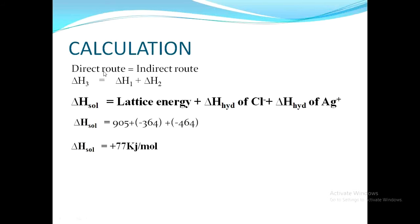In the calculation part, we know the direct route is equal to the indirect route. The direct route is represented by ΔH3, which is equivalent to ΔH1 plus ΔH2. ΔH3 is the enthalpy of solution of silver chloride, ΔH1 is the lattice energy of silver chloride, and ΔH2 is composed of the enthalpy of hydration of the chloride ion and the enthalpy of hydration of the silver positive ion.